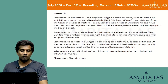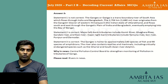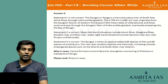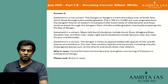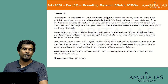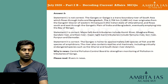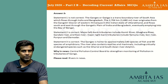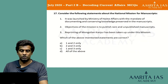The third statement is correct because the Ganges is home to approximately 140 species of fish and 90 species of amphibians. The river also contains reptiles and mammals including critically endangered species such as the gharial and the South Asian river dolphin.